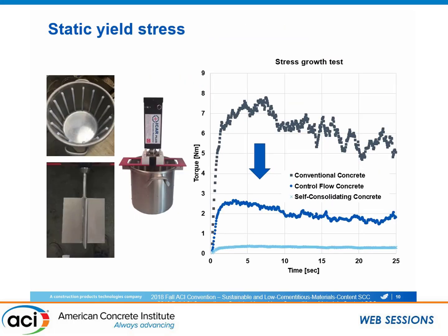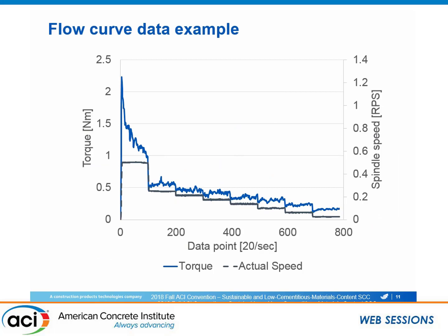The team used an ICAR rheometer. Here are some example mix designs: for normal concrete, as you'd expect, you get a much larger static yield stress. With the addition of the admixture — without changing the mix design — you get a very nice decrease in what would be the yield stress, indicating an increase in slump flow. And then down here you have your SCC, which is a properly designed mix with a different mix design. That's for the static yield stress.